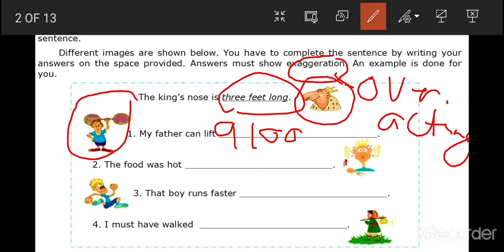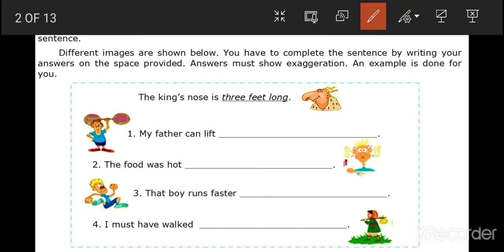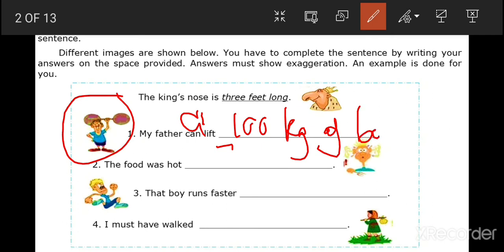Let us erase this part. My father can lift blank. So my father can lift a 100 kilogram of barbell. Is it possible that a man can lift a 100 kilogram of barbell? Of course not, because 100 kilograms would commensurate to an elephant. Can a man lift an elephant? No. So that is a hyperbole, that is exaggeration. All you need to do is to complete the sentence by writing phrases that show exaggeration.